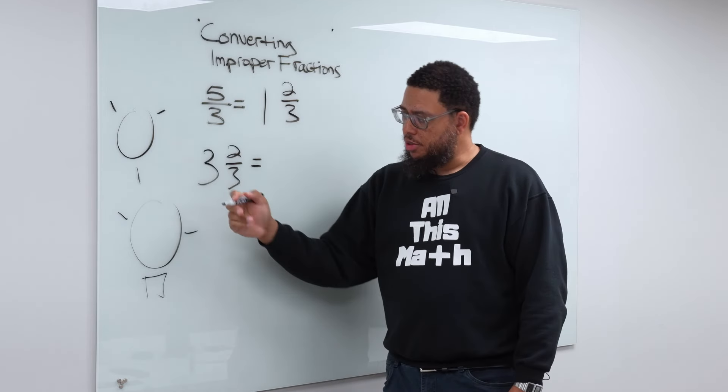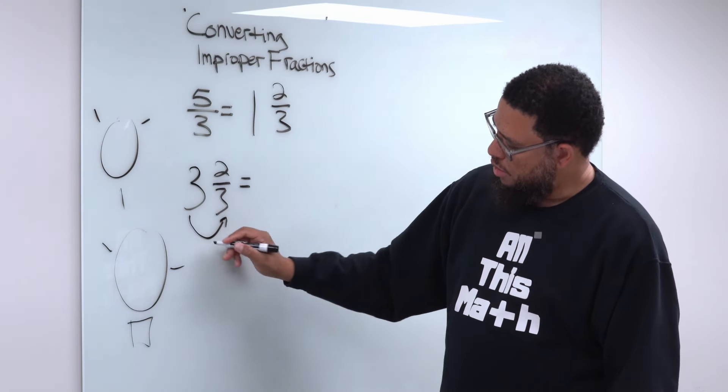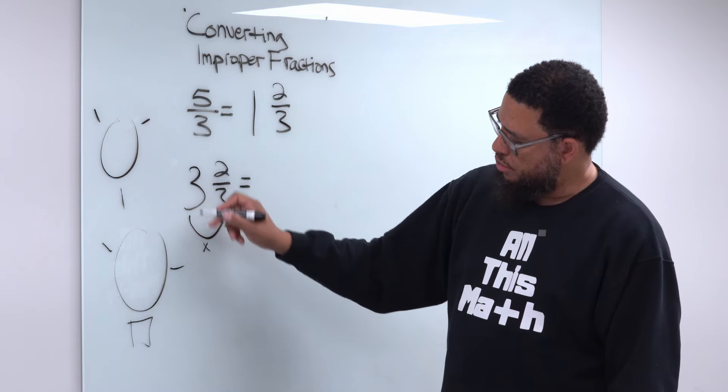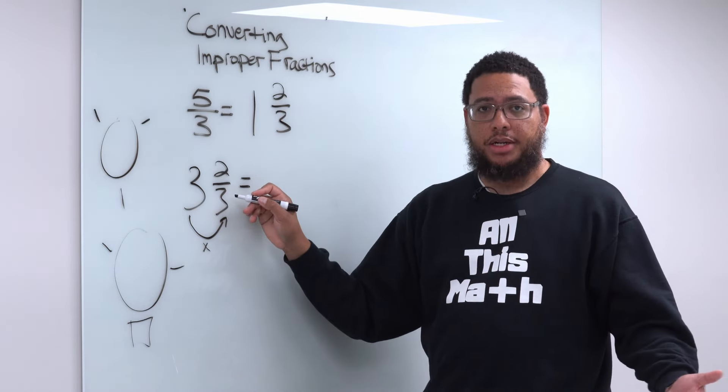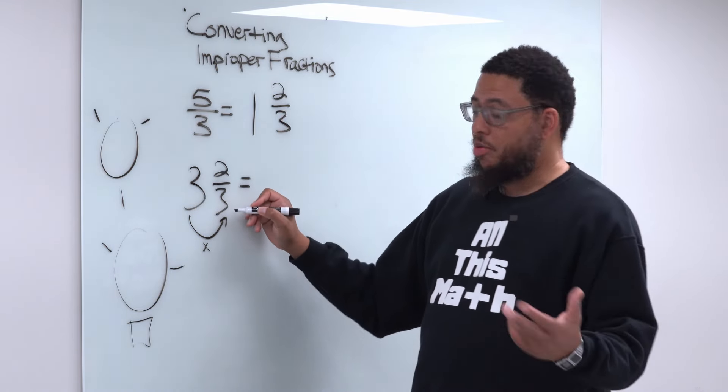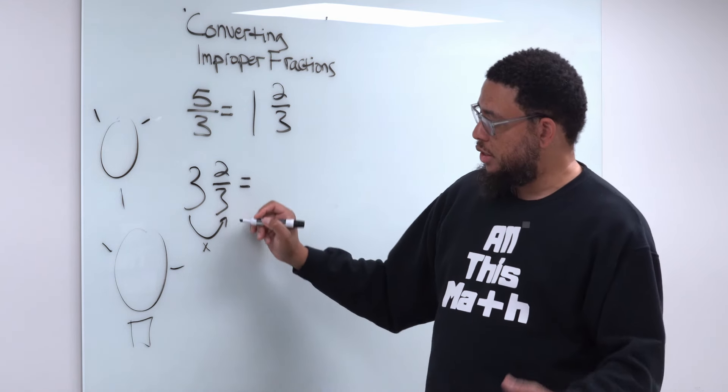What we do is you take the whole number, multiply it by the denominator. So 3 times 3 gives you 9, right? That's a product of 9. A product is the result you get when you do multiplication.